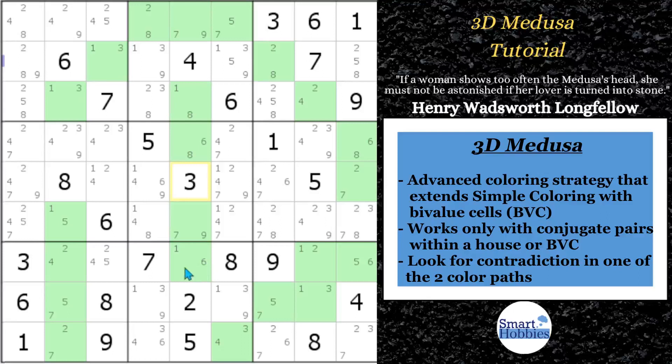The other thing to keep in mind is we're going to be using two different colors. Each color represents one of the possible solution paths. And so if we run into a contradiction with one of the colors, then we know the other path — the other color — has to be correct. Let's put 3D Medusa into practice.